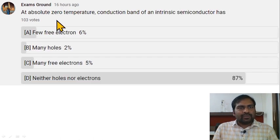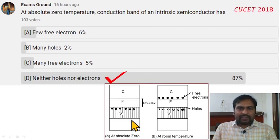At absolute zero temperature, the conduction band of an intrinsic semiconductor has... at absolute zero temperature, there are no free electrons and no holes as well. At room temperature, there are some free electrons in the conduction band and some holes in the valence band. So at absolute zero, there are neither holes nor electrons. Option D is correct here.